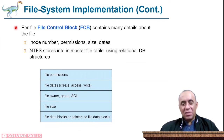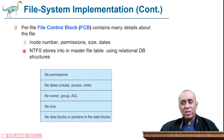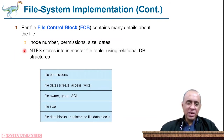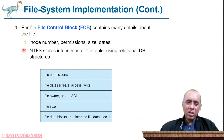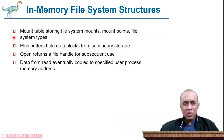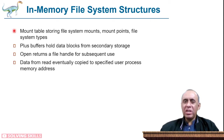A file control block (FCB) contains details about the file like its ID, permissions, size, and timestamps. NTFS stores this information in the master file table using relational database structures. The main difference between NTFS and FAT is that NTFS uses advanced database structures to organize and maintain files, making it faster than FAT.